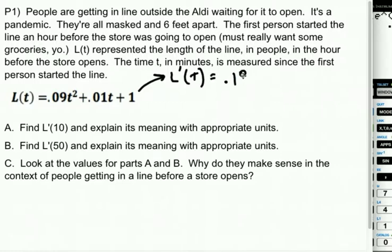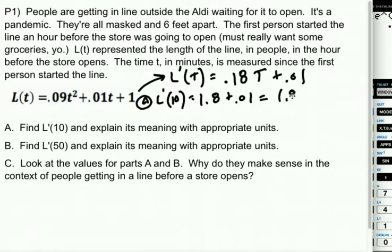So I'm going to get 1.8t plus 0.01. So when I'm asked to do A, L'(10) is going to be 1.8 plus 0.01, which is going to be 1.81 people per minute.